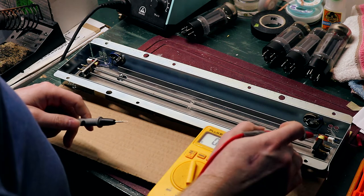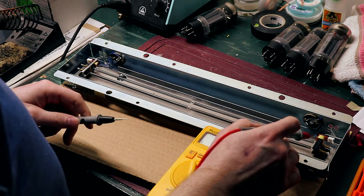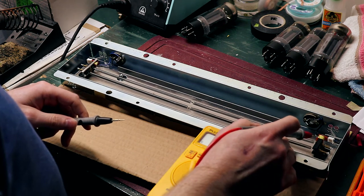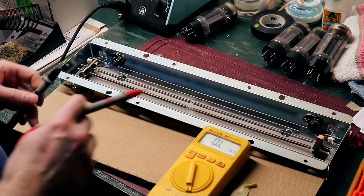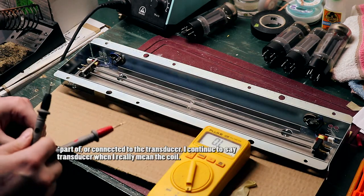Basically, what you're measuring is going to be the resistance across this coil here, and there's one at each end. That's basically a transducer.